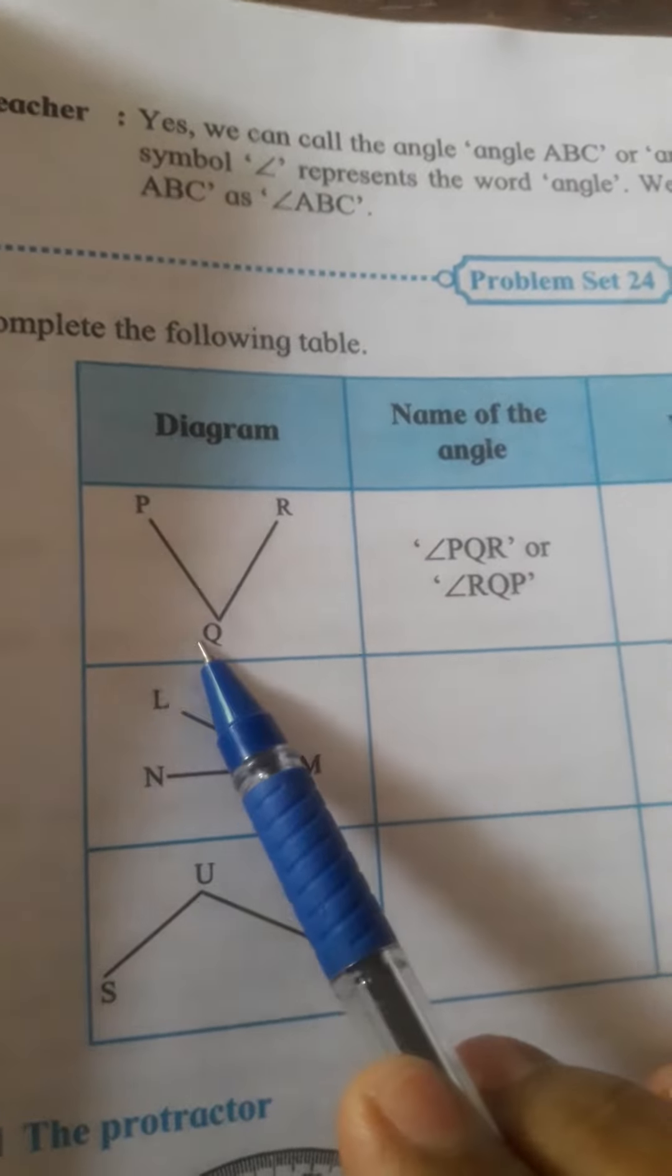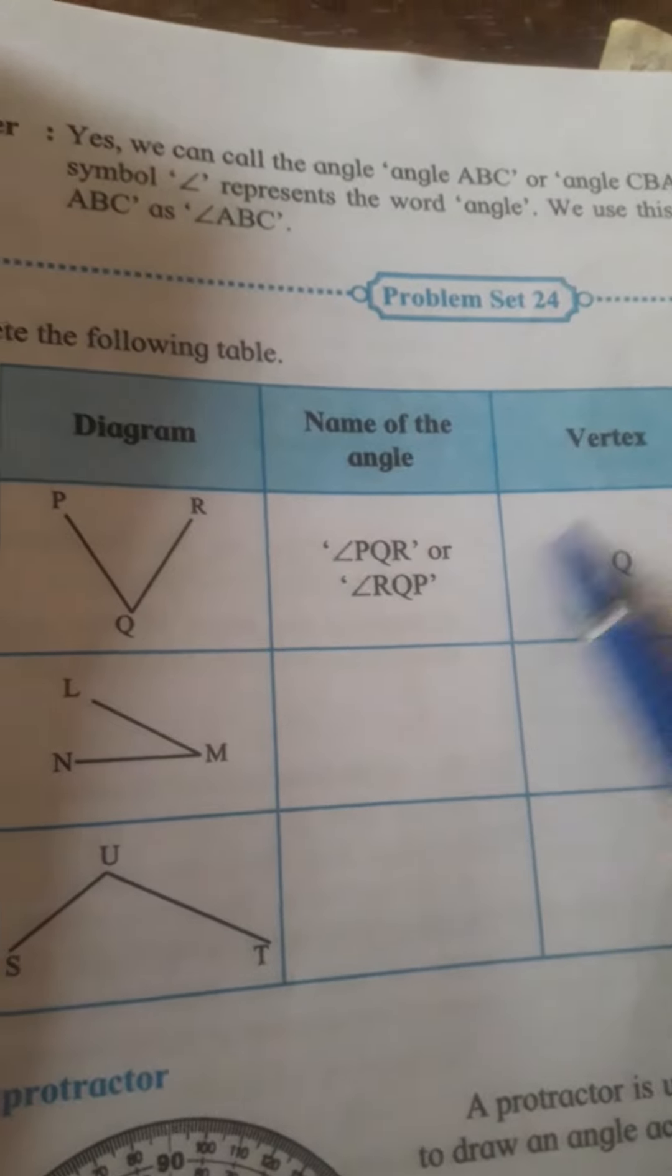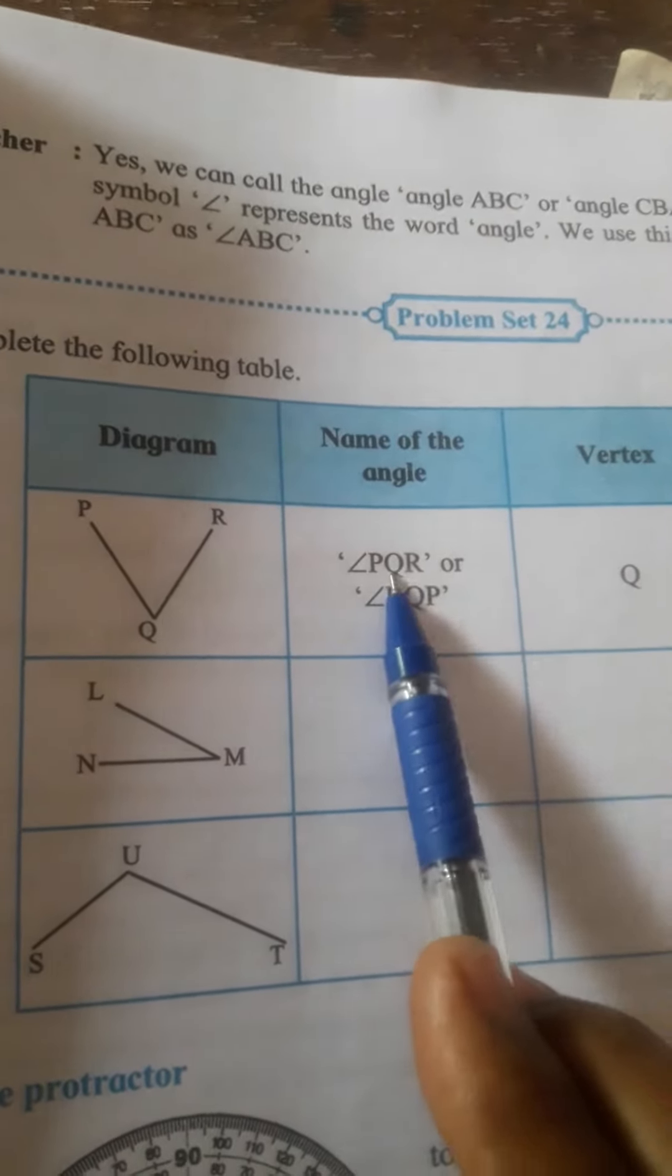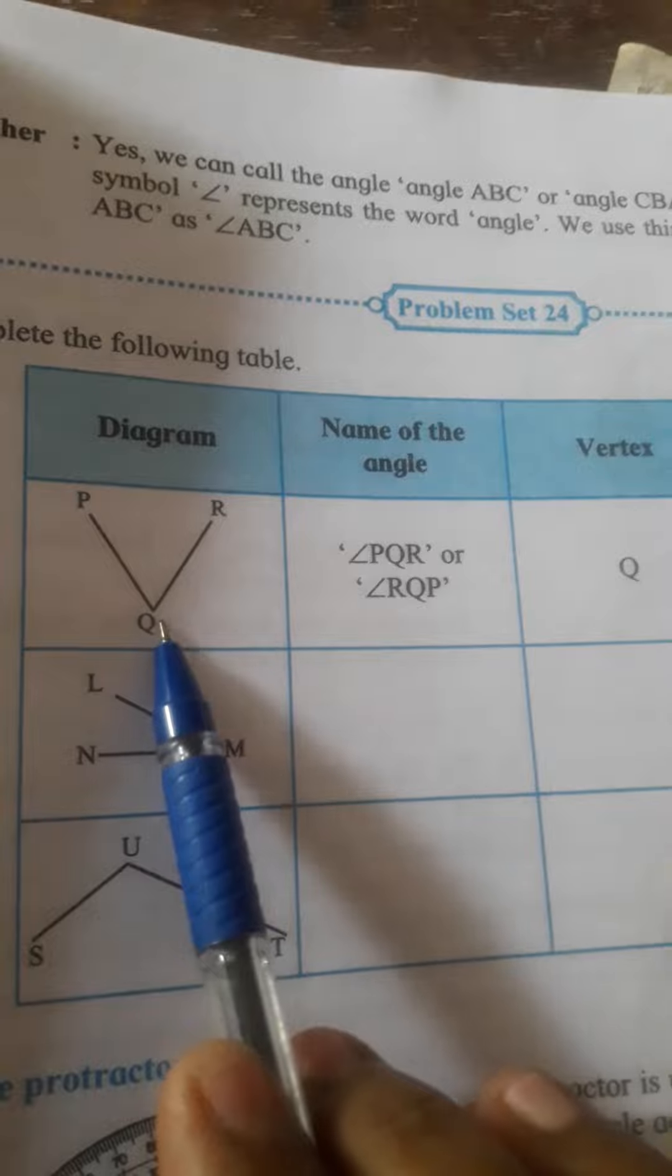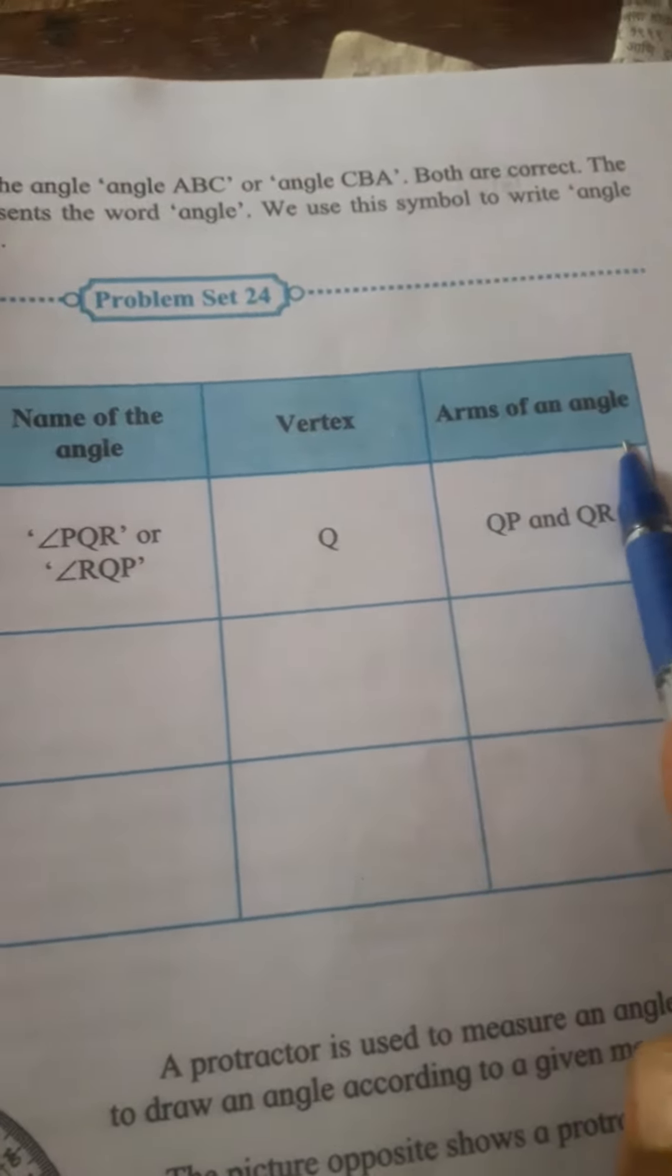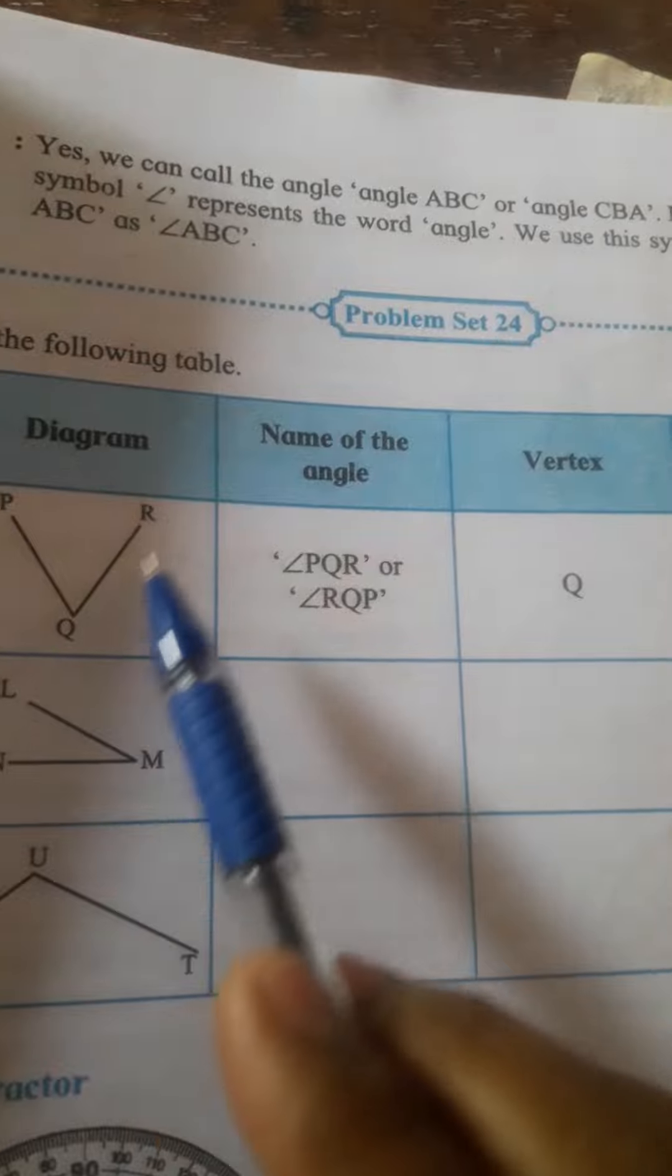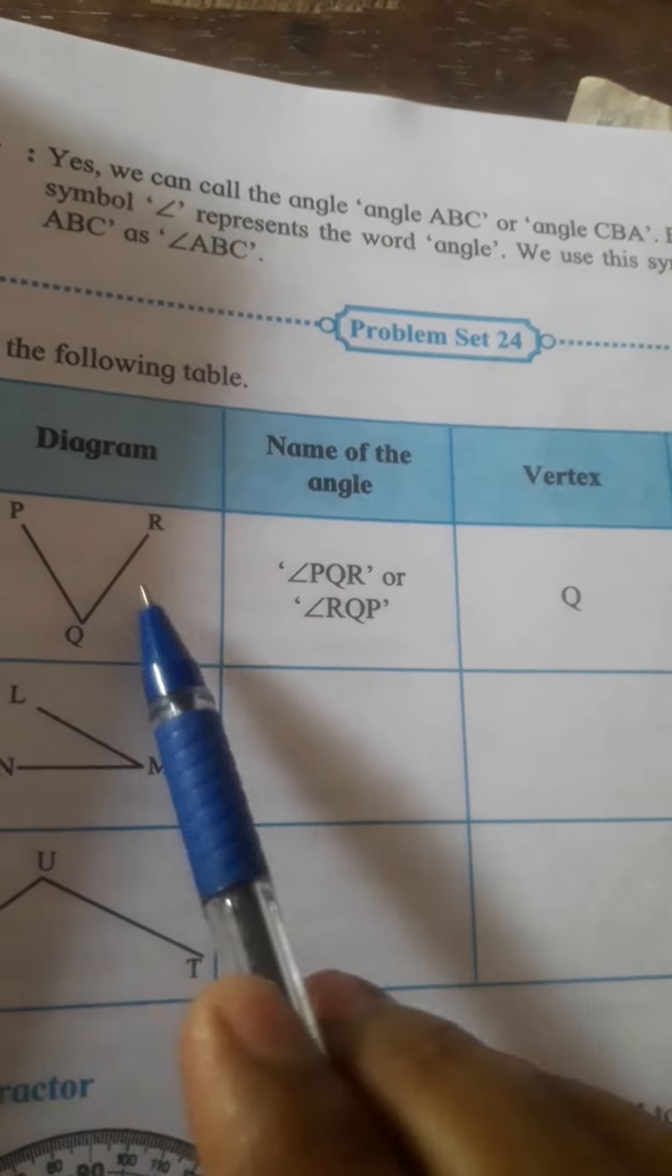The vertex is the middle point, so here it is Q. Next, the arms of the angle are QP and the second one is QR. These are the two arms